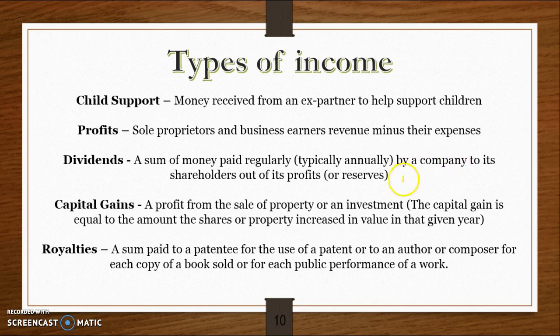Capital gains are received when you sell a property or another investment, like shares, for a price higher than what you bought it for. For example, if you bought an investment property for $500,000 and sold it for $800,000, you would receive a capital gain of $300,000. A capital gain occurs when you sell an investment property or shares for a higher price than what you paid.